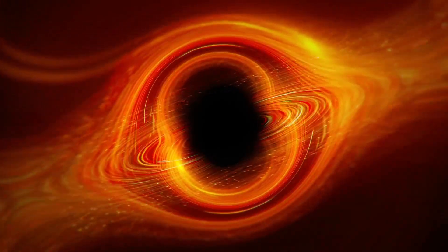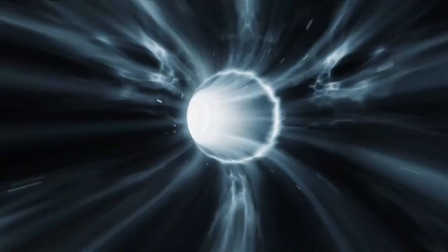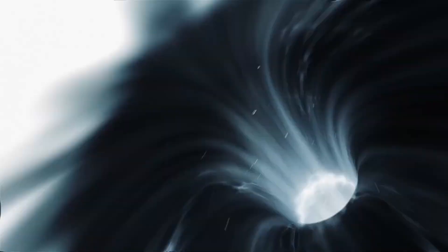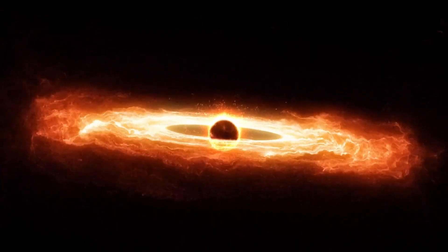Essentially, when a massive star dies, it leaves behind a tiny dense core. If this core's mass is more than three times that of the sun, gravity overwhelms everything else, leading to the formation of a black hole.